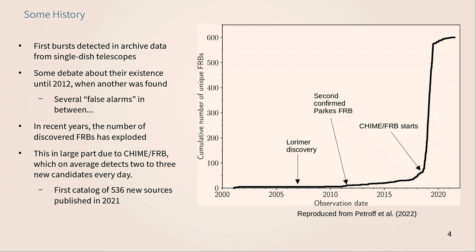The history of FRB discovery is really well captured in a figure showing the cumulative number of FRBs discovered over time. We see the first Lorimer discovery back in 2007, going back to the burst in 2001. Another one was detected a few years later. Then suddenly there's a huge leap when the CHIME FRB experiment started observing the sky — that's when we started having experiments that could look for FRBs in real time. CHIME published a catalog of 536 new sources last year, and we're seeing on average around 1,000 candidates every year — about two to three a day.